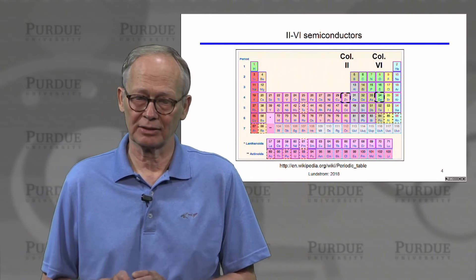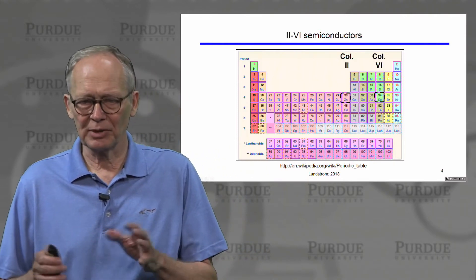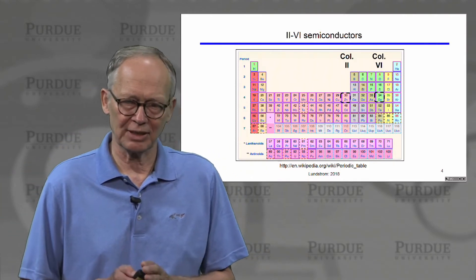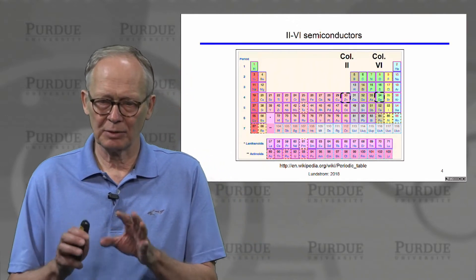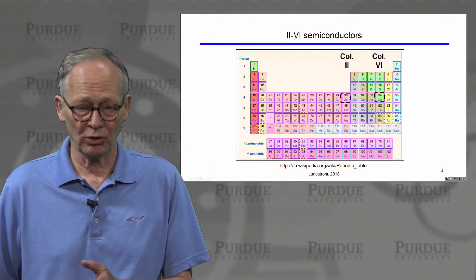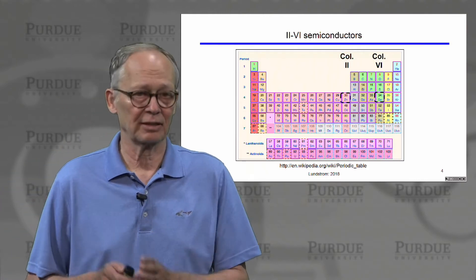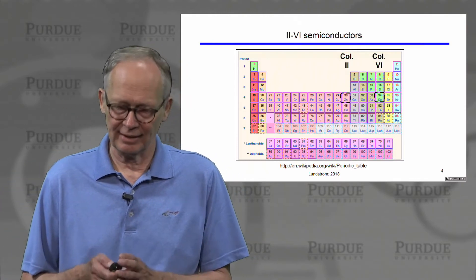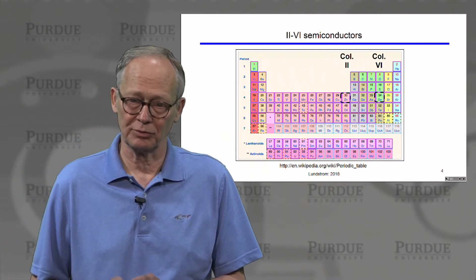Now, there are other materials that also have properties of semiconductors. But a lot of the most common semiconductors come from this part of the periodic table. Column four or columns adjacent to column four, such that we get an average number of valence electrons that is equal to four.